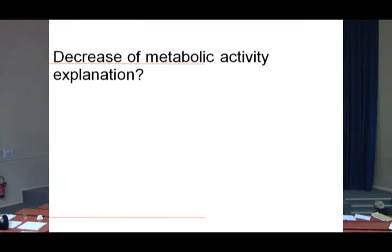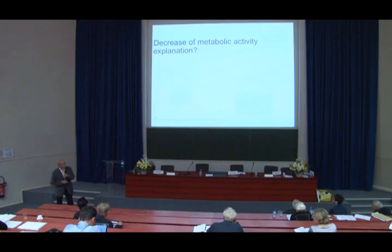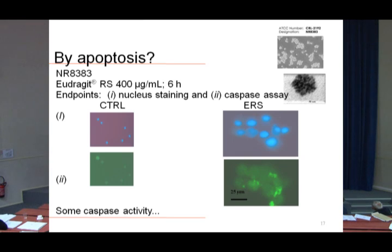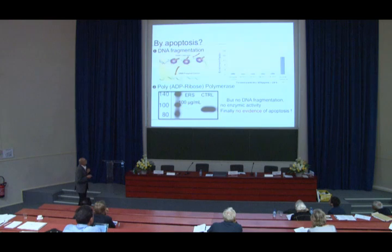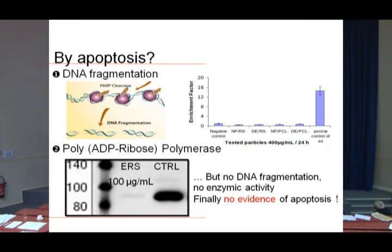The question is: why do we observe a decrease or an increase of metabolic activity? As a toxicologist, when I see a decrease of metabolic activity, I think of necrosis or apoptosis. We checked for apoptosis: with high doses of ERS nanoparticles, there was some caspase activity in the cytoplasm. However, a DNA fragmentation test showed no fragmentation compared to positive control, and no enzymatic activity of poly-ADP-ribose polymerase. So finally, there was no evidence for apoptosis.